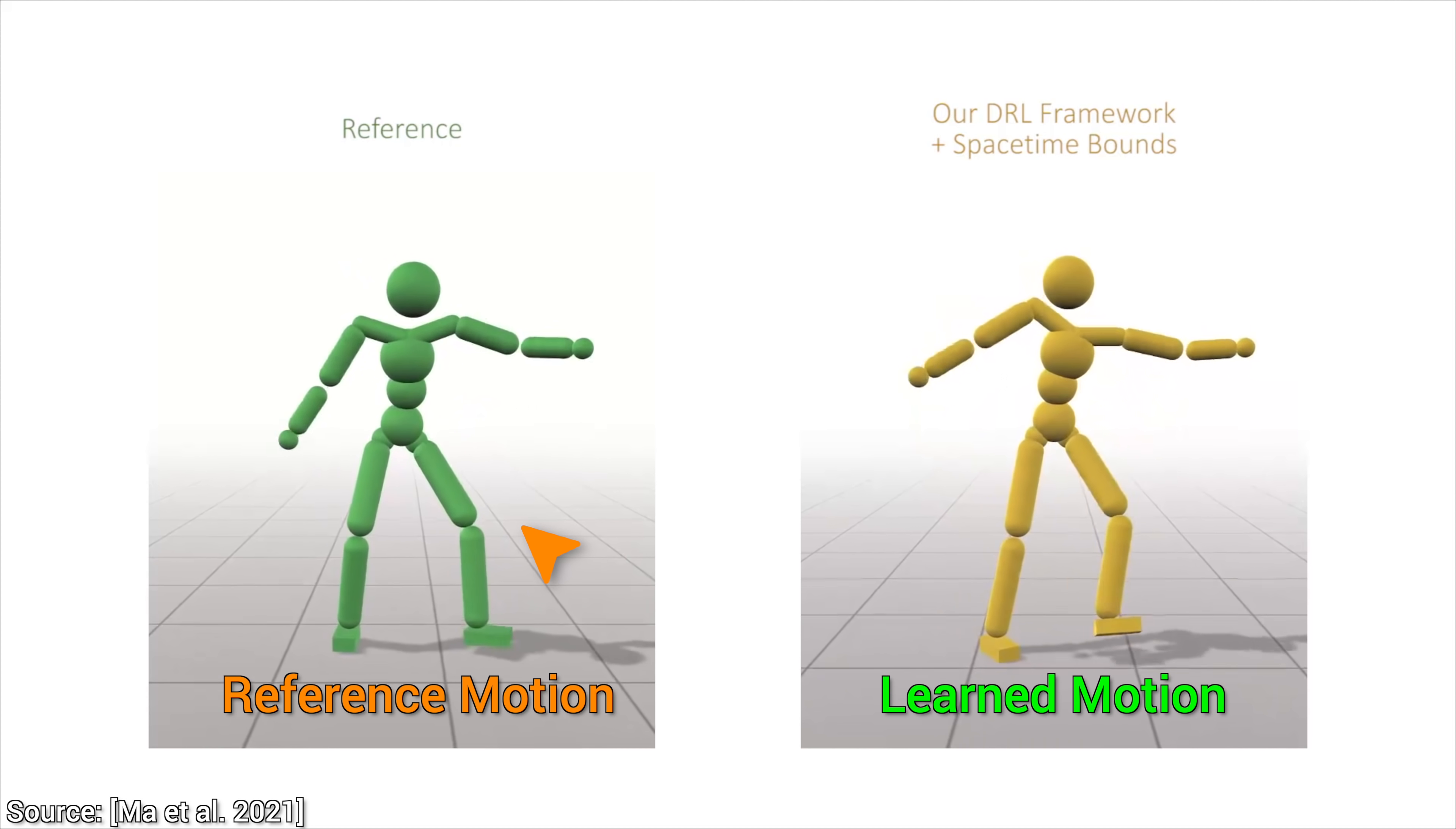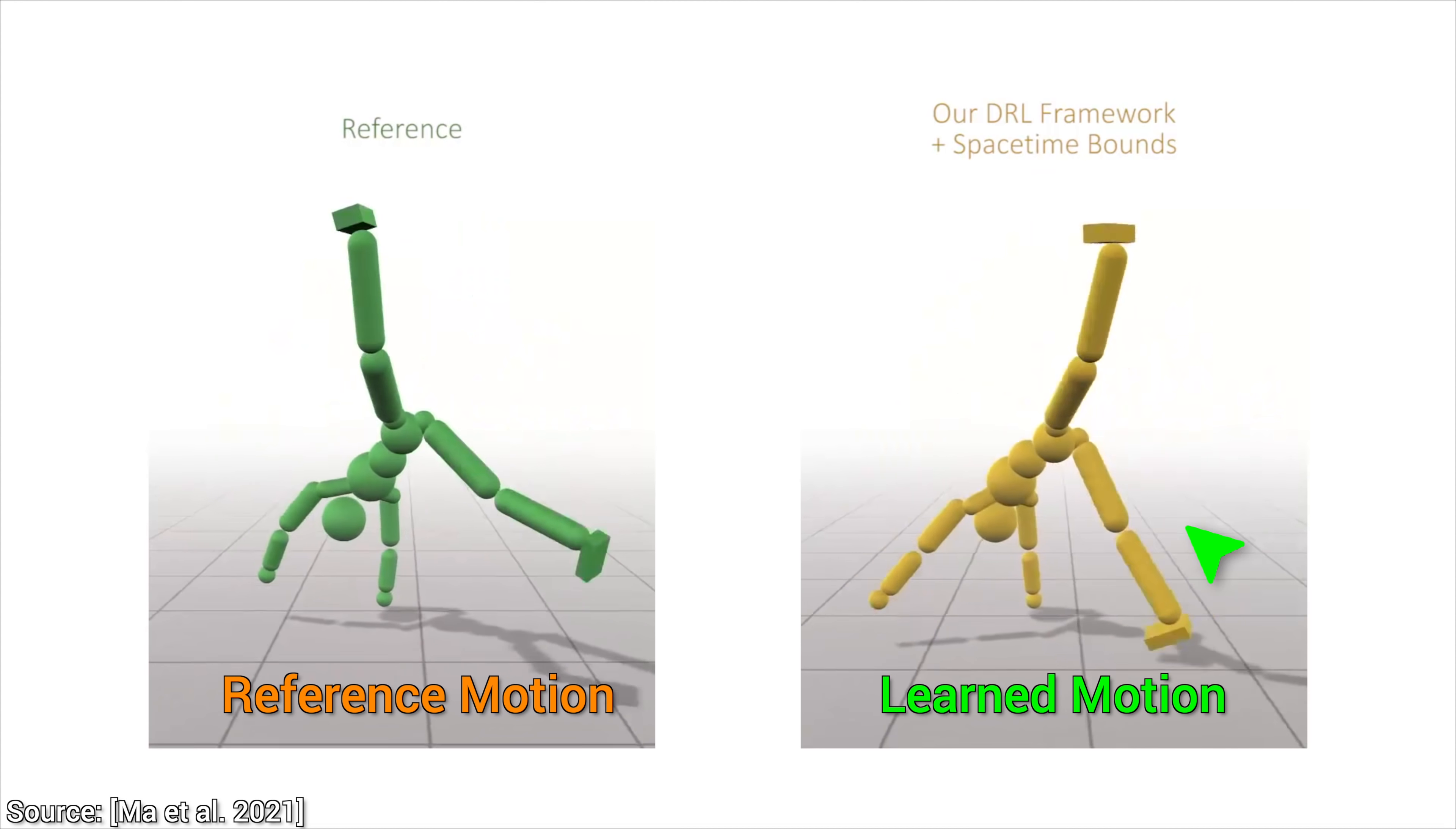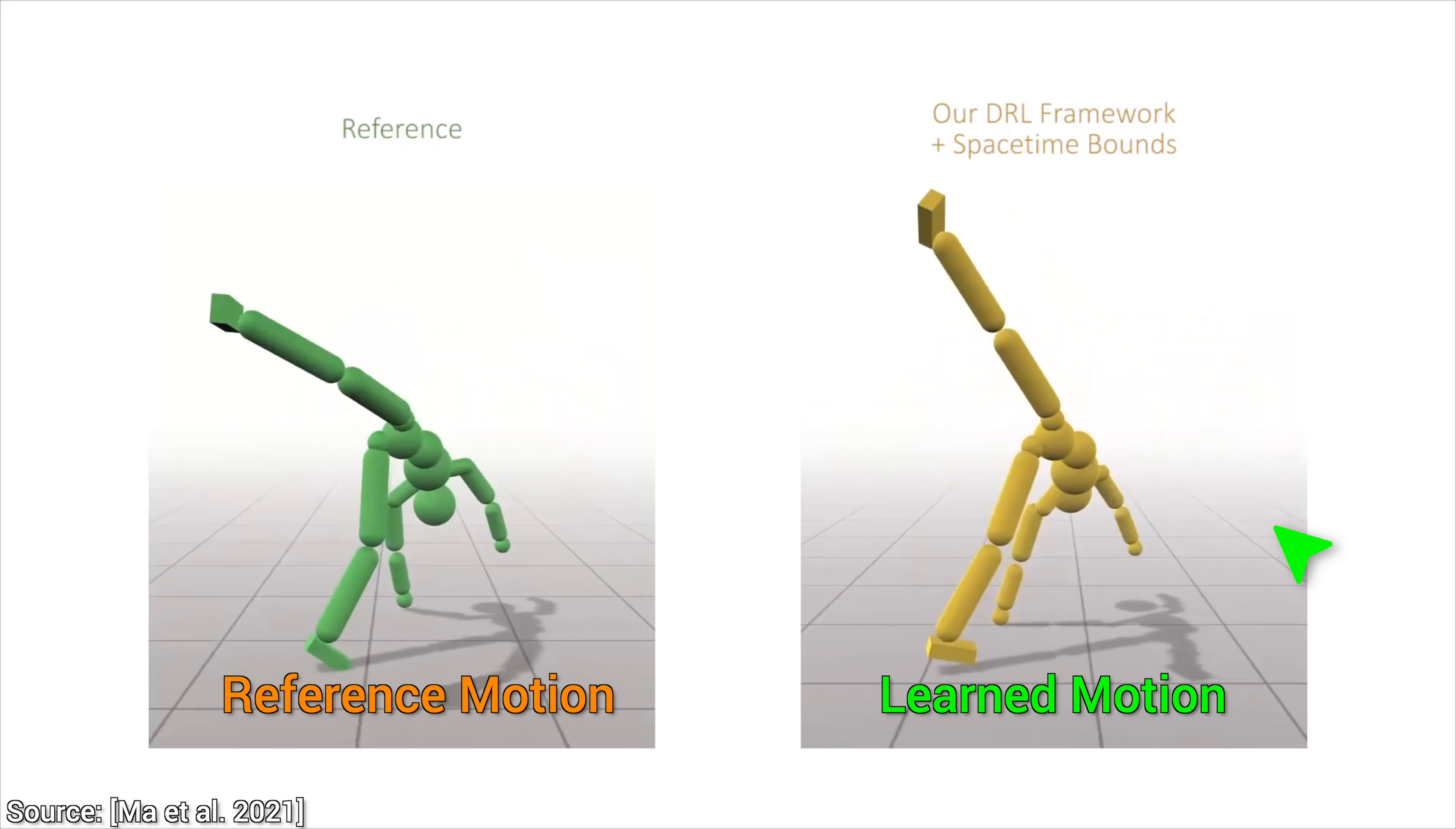Now, here you see a piece of reference motion. This is what we would like our virtual character to learn. The task is to then enter a physics simulation where we try to find the correct joint angles and movements to perform that.